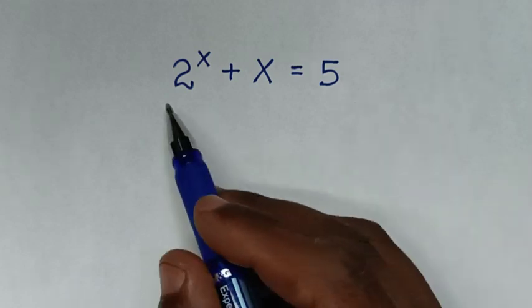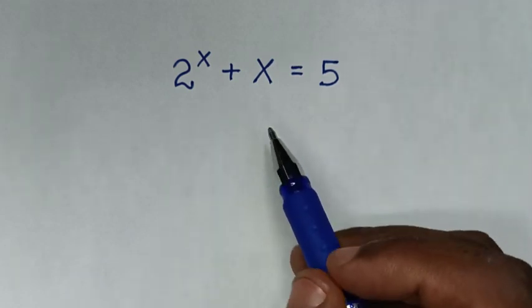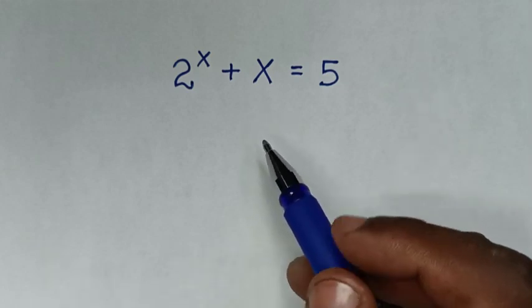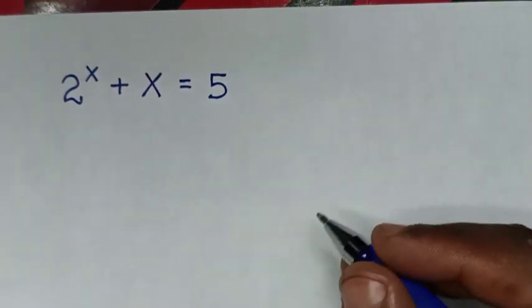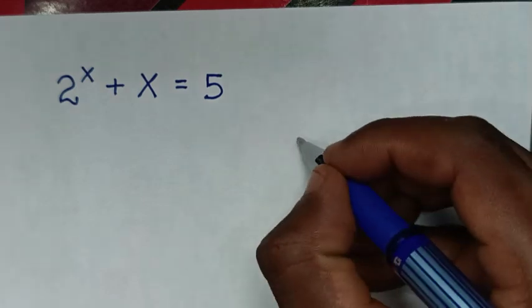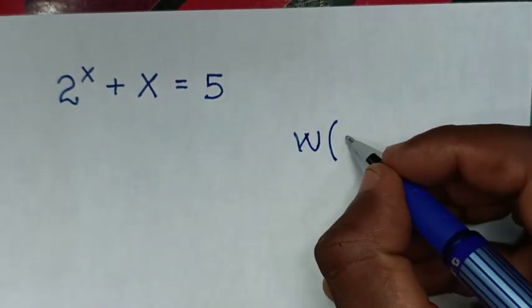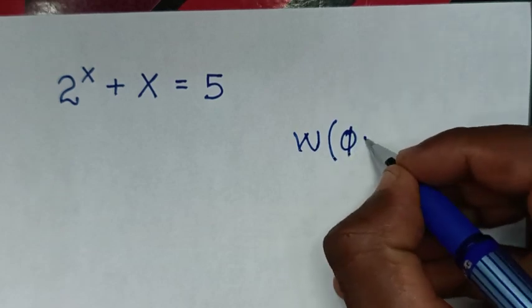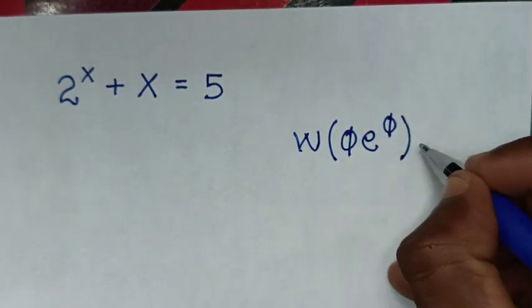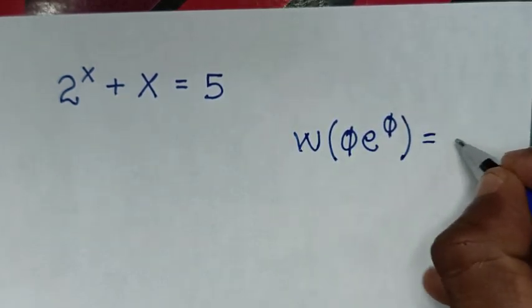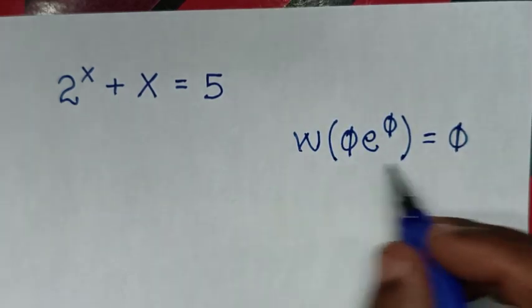For this problem we'll use the Lambert W function. The Lambert W function is in the form W(θ·e^θ) = θ. We'll apply this form to solve our equation.